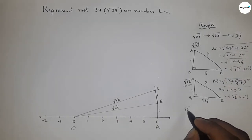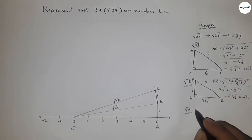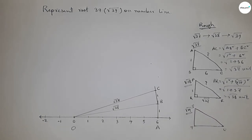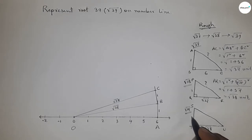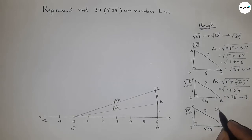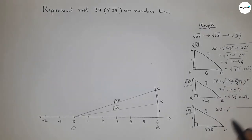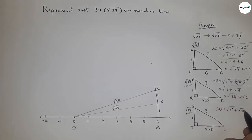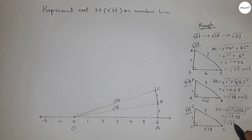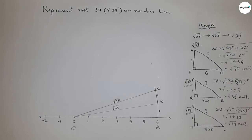For root 39: if there is a right angle triangle STU with base root 38 and height 1, then by the Pythagorean theorem, hypotenuse equals root of (1 squared plus root 38 whole squared) = root of (1 + 38) = root 39 units.